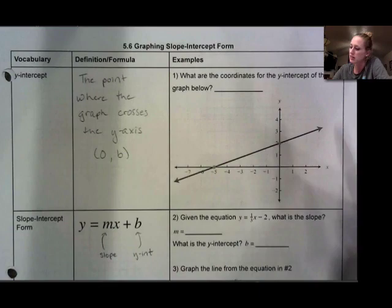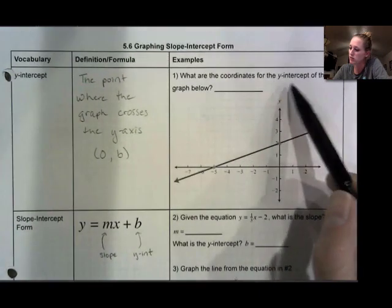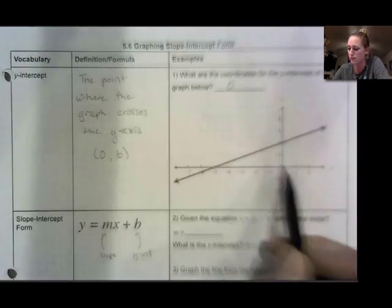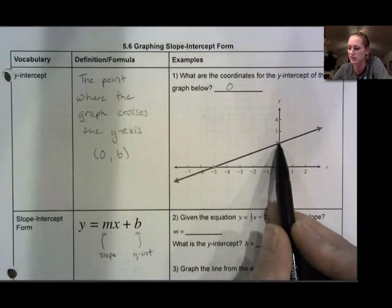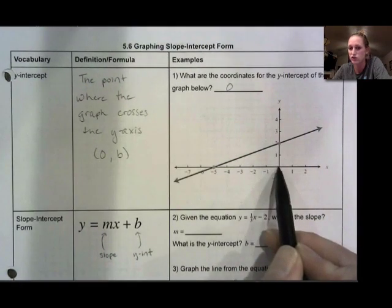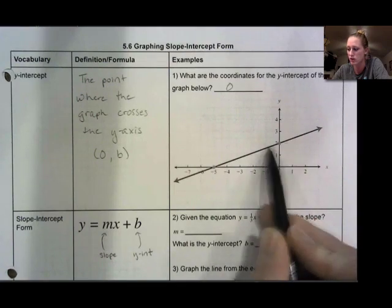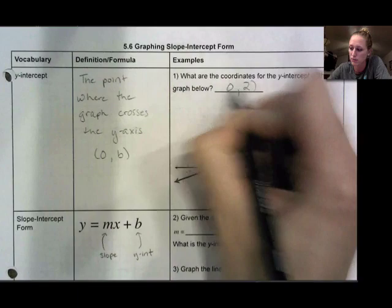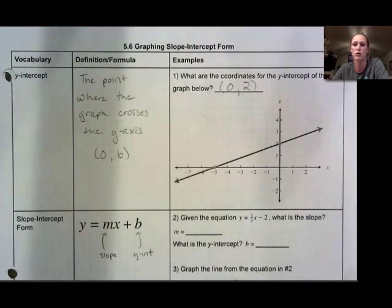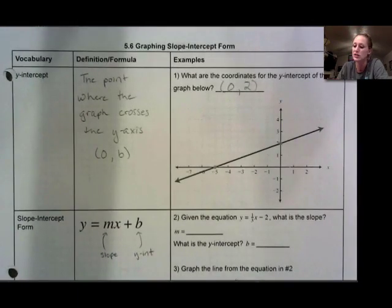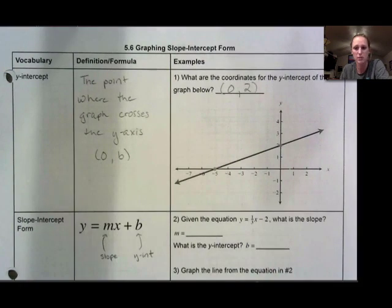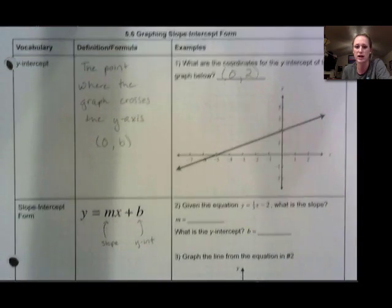In this example, it asks what are the coordinates of the y-intercept. X is always 0 — if I want to get to the point on the y-axis, I don't go left or right at all. 0 is the x that goes with it, and then I go up to 2. So 2 is my y-intercept, and the ordered pair or coordinates would be (0, 2) — always 0 and then whatever number our line crosses the y-axis at.